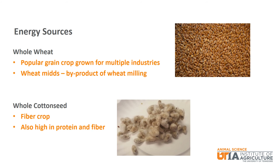The last two energy sources we will discuss today are wheat and whole cottonseed. Whole wheat, like oats, is a popular grain crop grown for multiple animal industries including humans. Another form are wheat mids, which are a byproduct of the wheat milling process. Whole cottonseed is a fiber crop grown for the cotton fiber and is high in energy as well as protein and fiber.